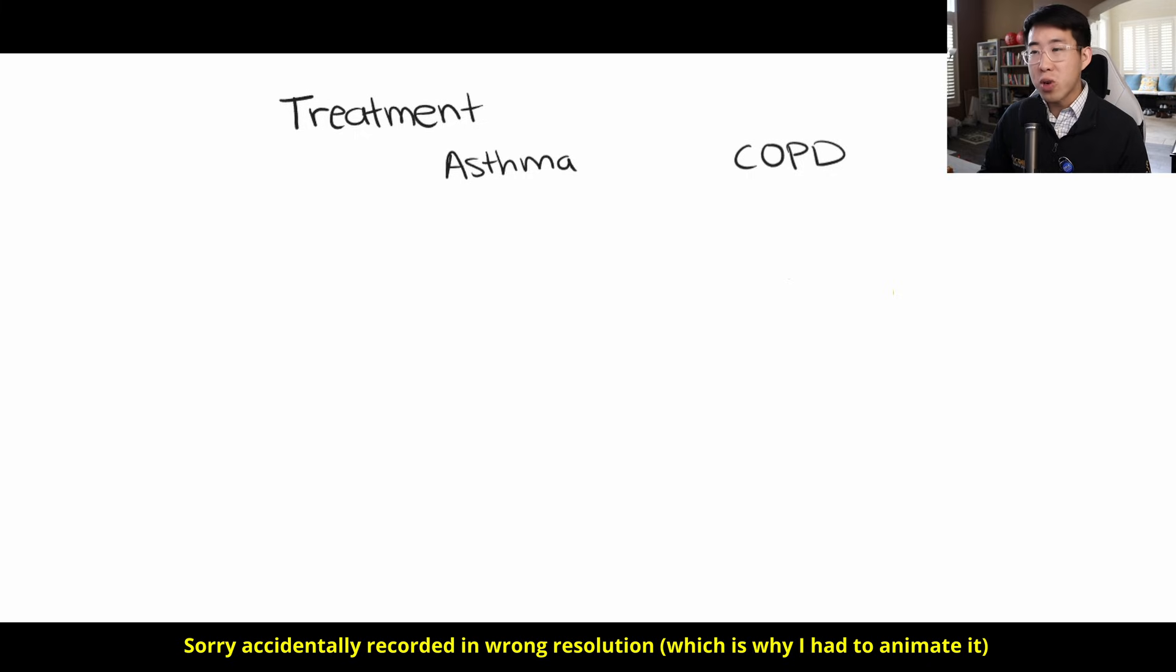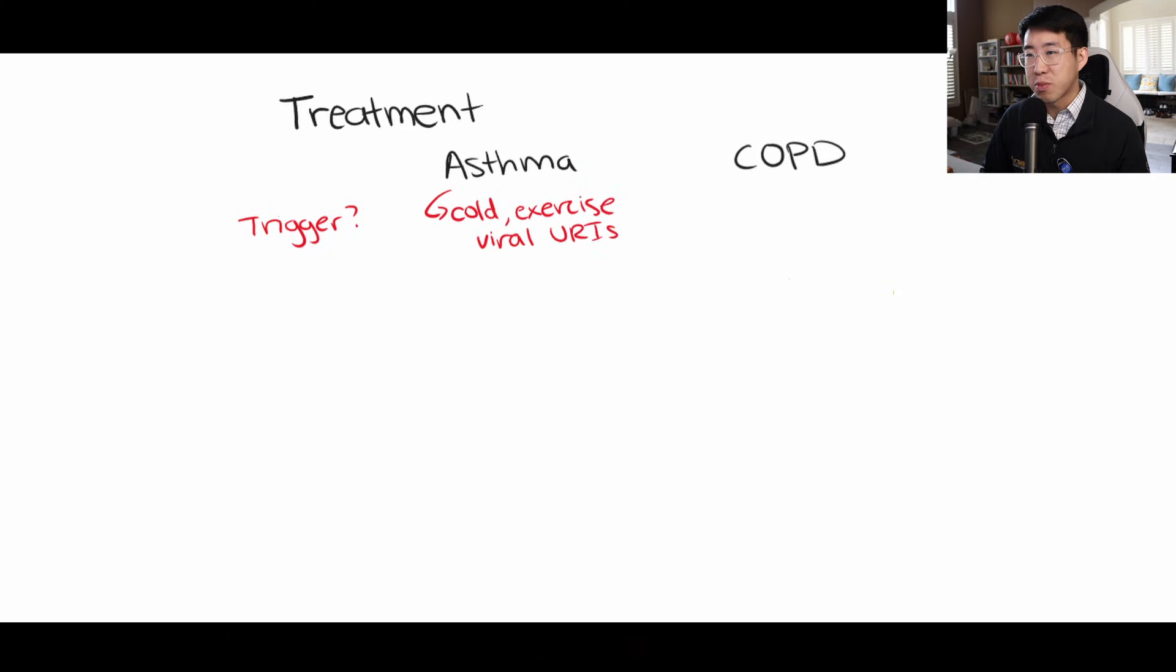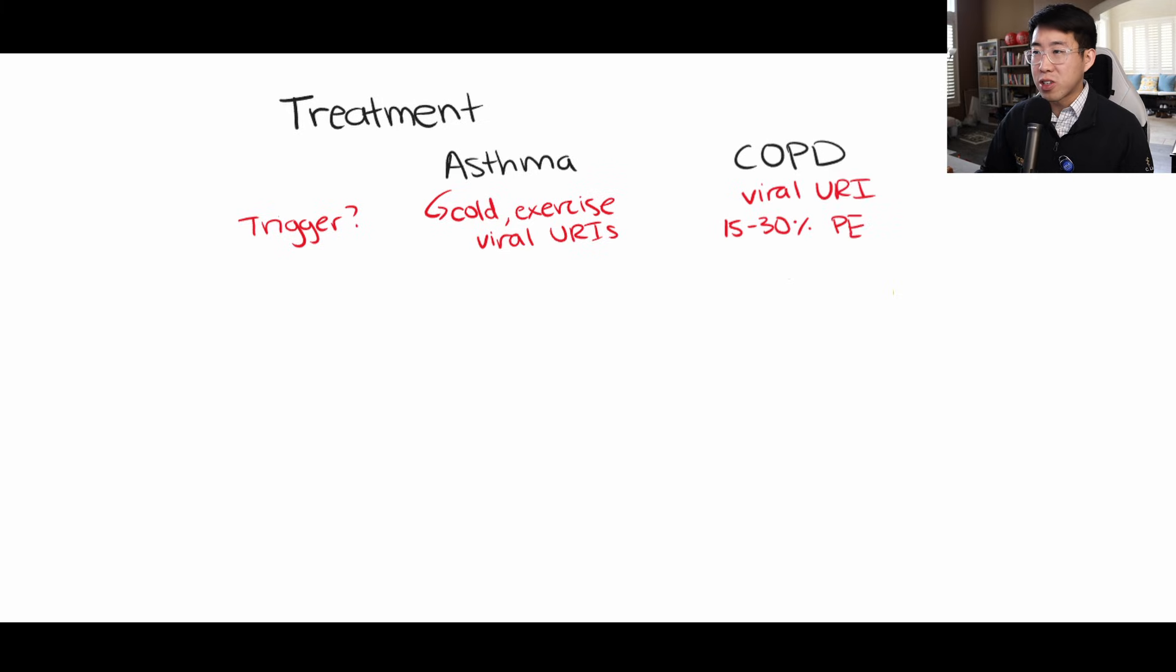First thing to really notice, what we always have to look for is a potential trigger. For asthma, some typical things you may hear are exposure to cold can cause an asthma flare or exercise, you can get exercise induced asthma. And of course, viral URIs is very common as well. In COPD, very often it's going to be a viral URI, but there's actually a lot of literature that states that up to 30% of COPD exacerbations may be triggered by PEs.